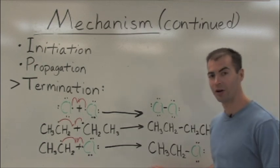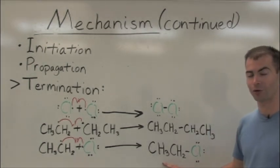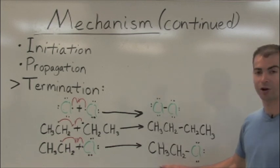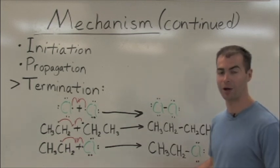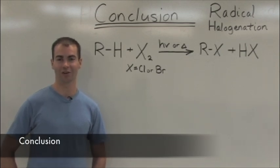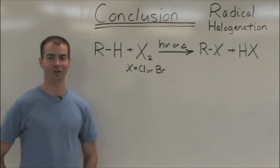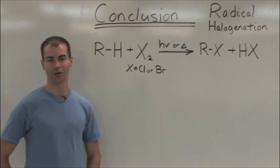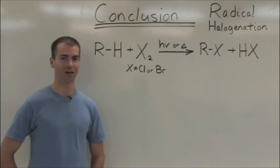Know, however, that this is not the main mechanism to form the ethyl chloride product. It's generated primarily through the propagation cycle. In conclusion, radical halogenation is an important reaction that allows one to convert an alkane to an alkyl halide.